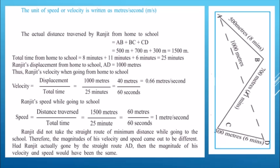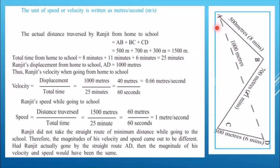The unit of speed or velocity is written as meters per second, so if distance is in minutes you have to convert it. First we find the total distance travelled by Ranjit via path A, B, C, D: 500 plus 700 plus 300 equals 1500 meters. The total time required is 8 plus 11 plus 6, which equals 25 minutes. So Ranjit covered 1500 meters in 25 minutes.